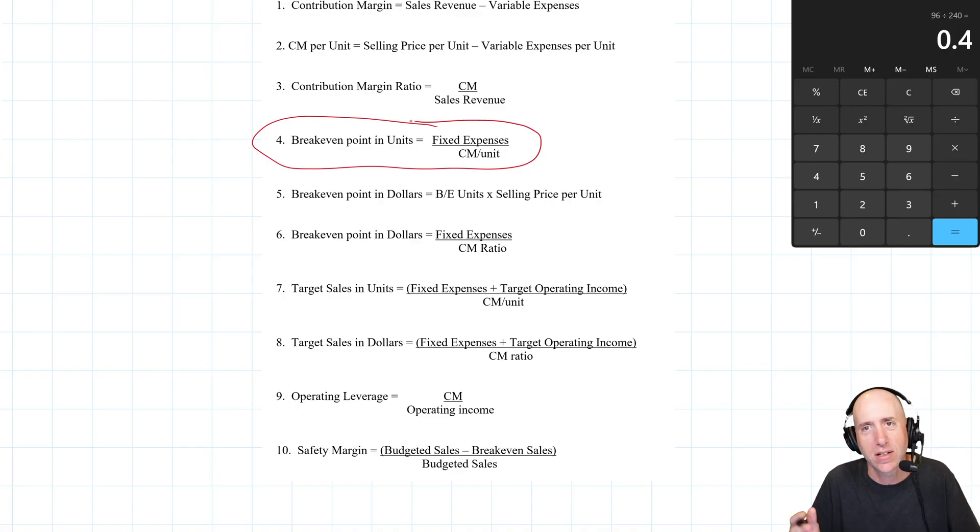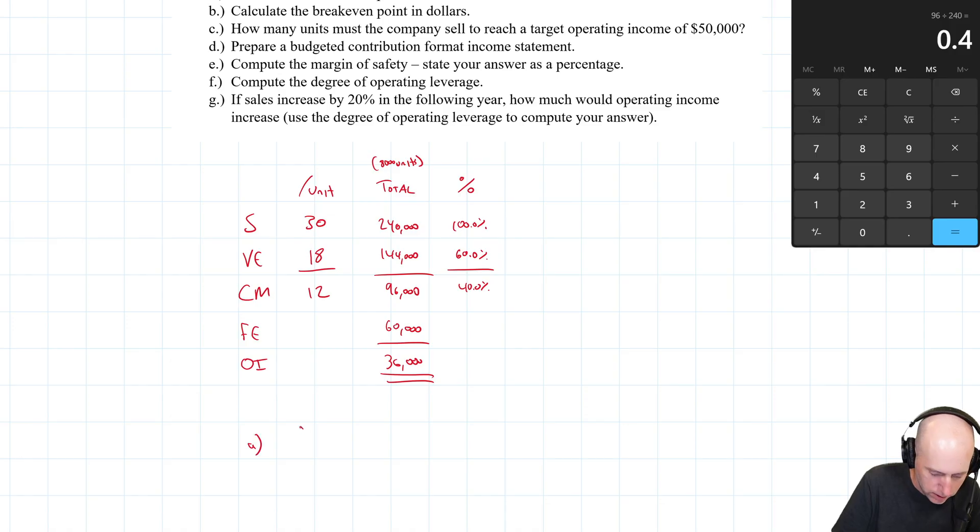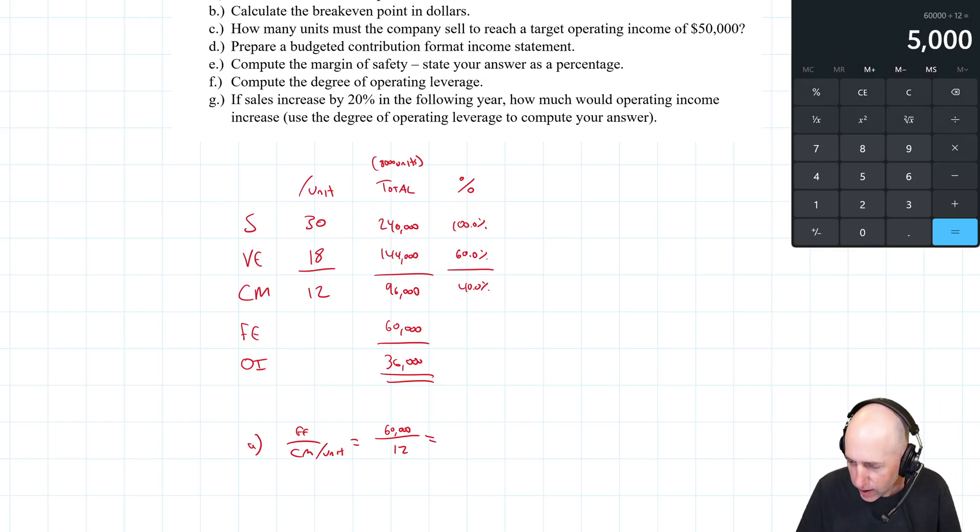The key formula outside of that is breakeven units, sort of like the cornerstone of the whole thing. Really focus on that one. You'll see it as you're practicing, you're going to see this over and over again. It's fixed expenses divided by CM per unit. And that's the first one we're asked for. It says calculate breakeven units. So our breakeven units is fixed expenses divided by CM per unit. Our company's fixed expenses, $60,000, our CM per unit, $12. 60,000 divided by 12, 5,000 units.